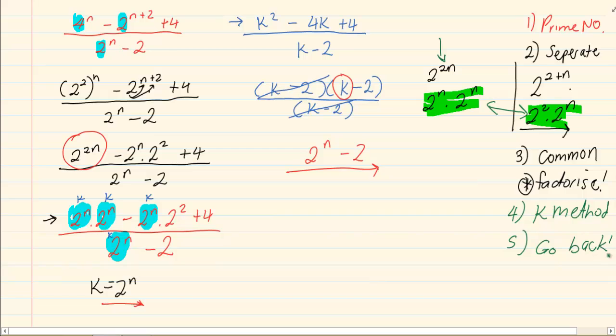Some pupils can factorize from this level and they don't need to use the k method. But for me, I think for error purposes and carelessness, it is easier to use the k method. Thank you for watching.